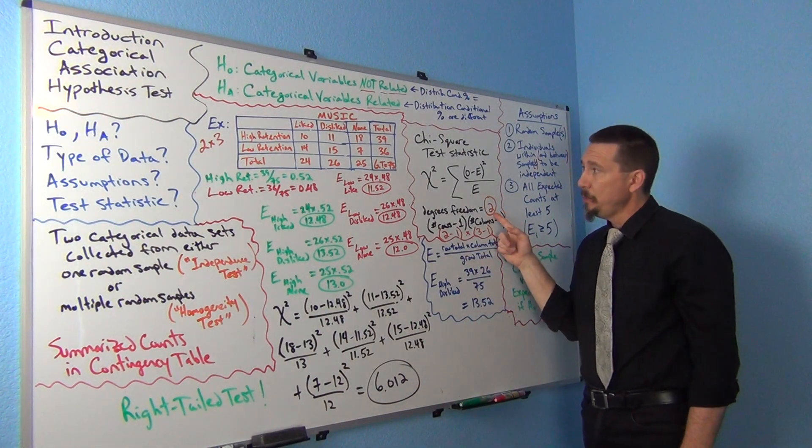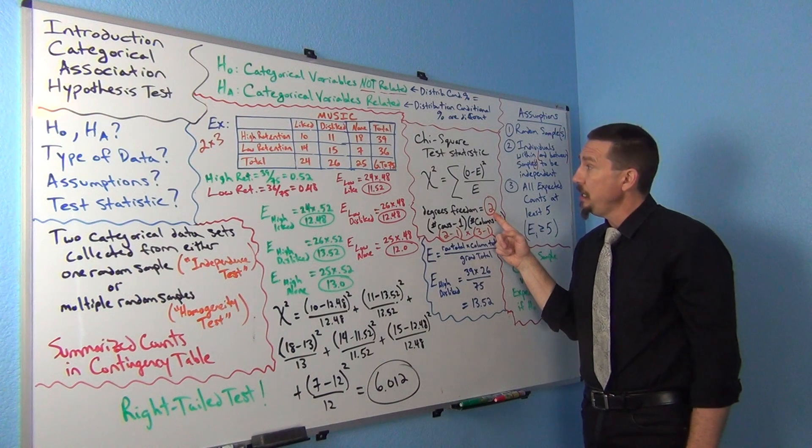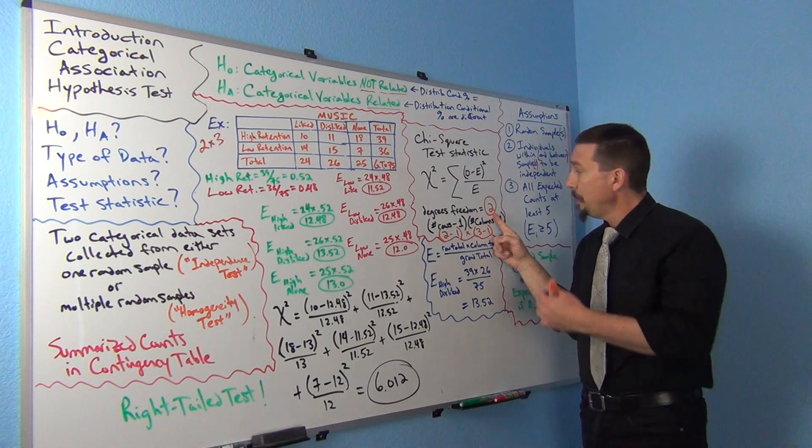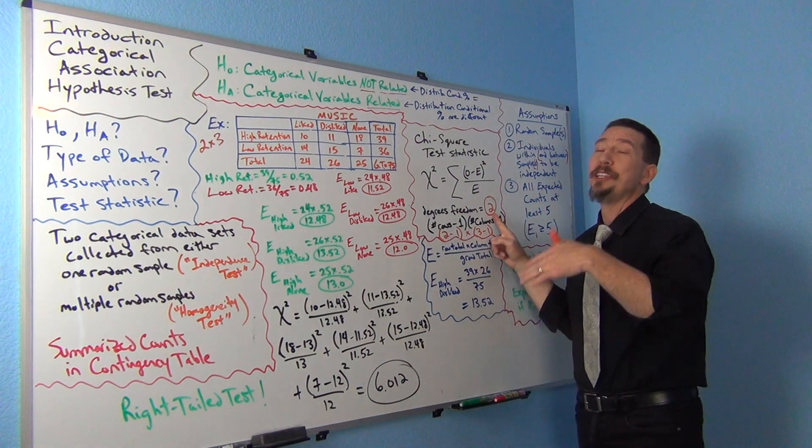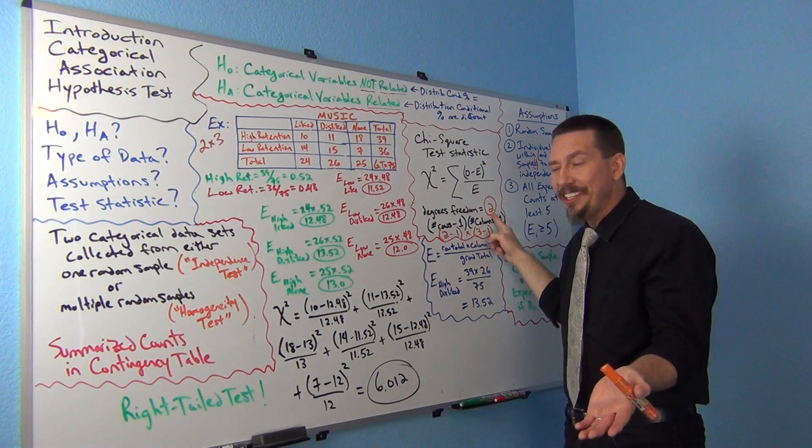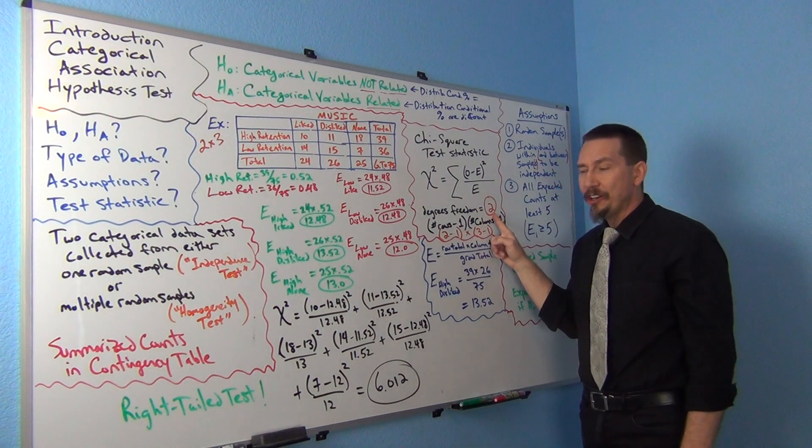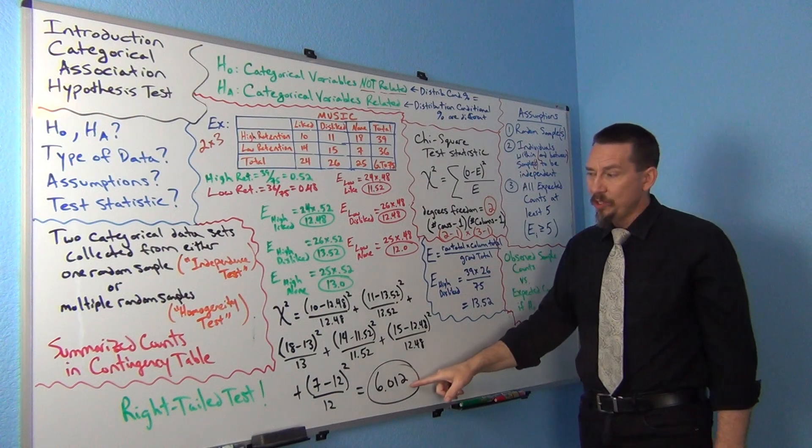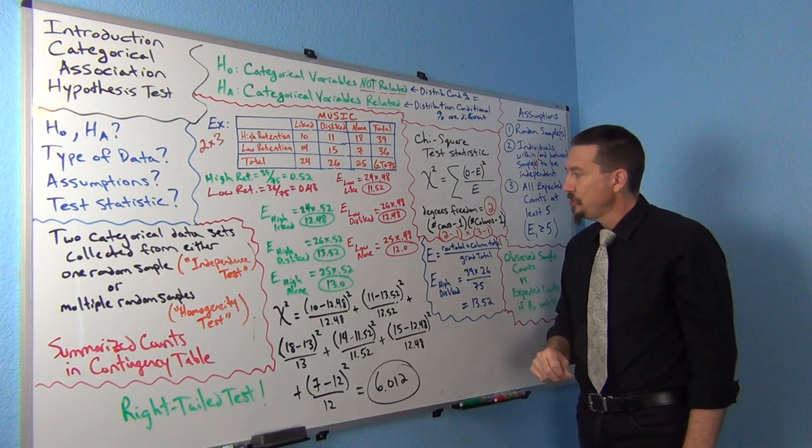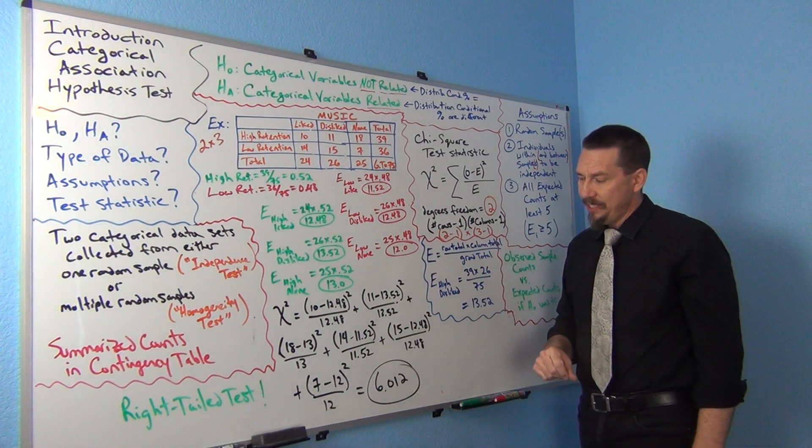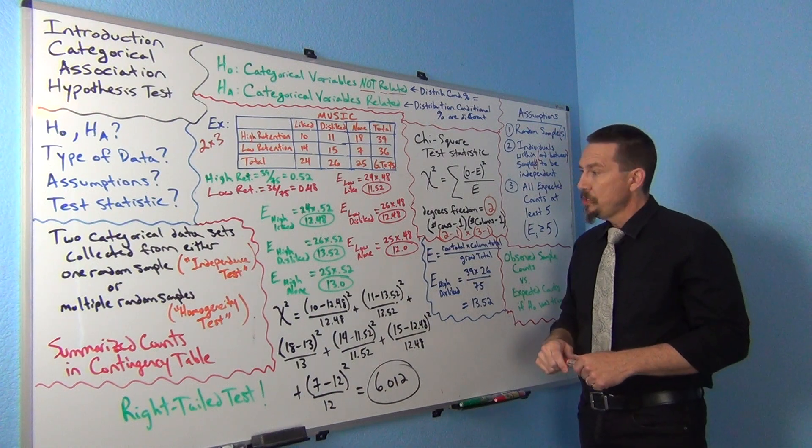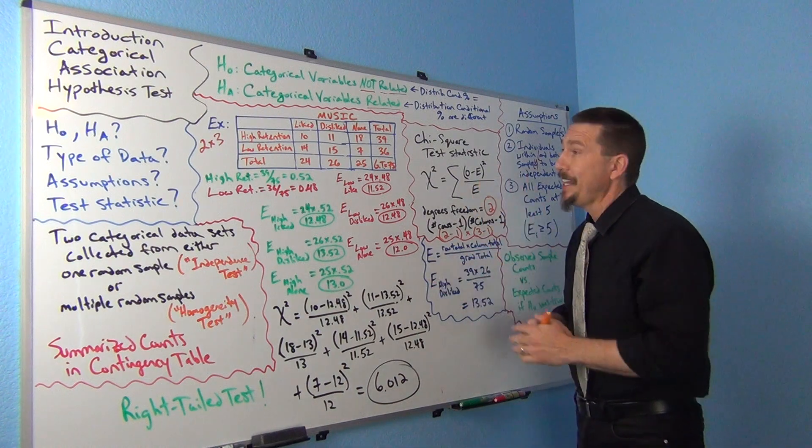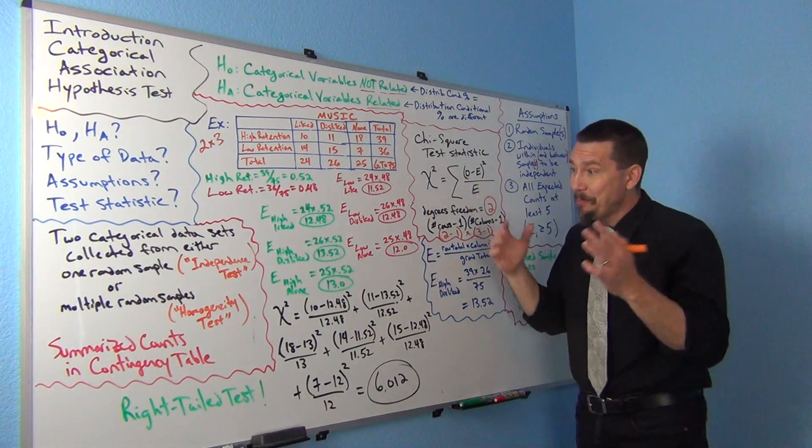Now we can use the degrees of freedom and the theoretical distribution calculator in StatKey to get our critical value and see if this falls in the tail or not, determined by our significance level. So this is the categorical association hypothesis test.